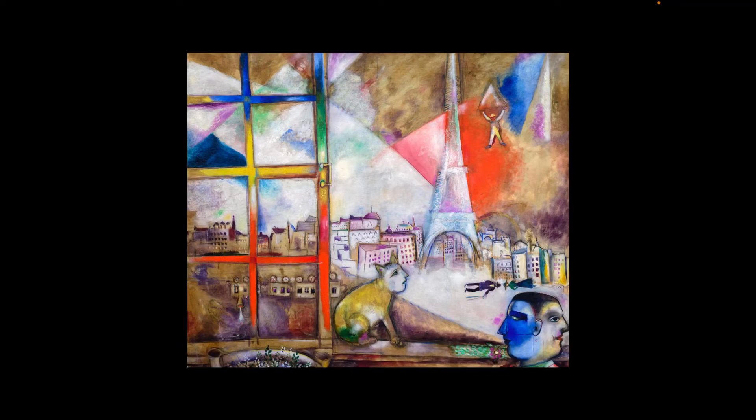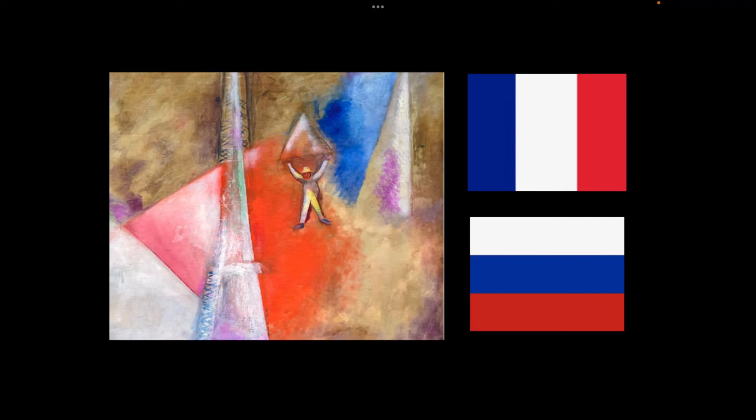You can see that beside the Eiffel Tower there is a man parachuting. And behind the man who is parachuting, there are three colors: red, blue, and white. I believe that the three colors represent the flags of both France and Russia.